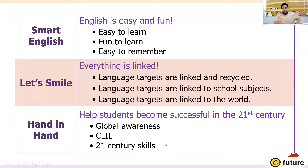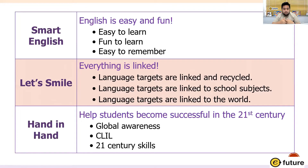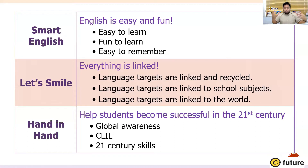With Let's Smile, we take a little bit of both. We try to link everything together — some of these features go together with both Smart English and Hand in Hand. We have targets being linked and recycled. From Smart English's easy-to-remember approach, we get students to continually build upon language targets throughout the series. Language targets are linked to school subjects — similar to content learning — and also linked to the world. In Let's Smile, 'the world' means more like our immediate world around us, which also includes global awareness.